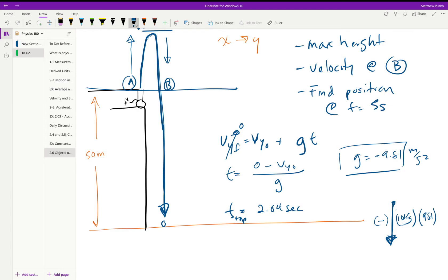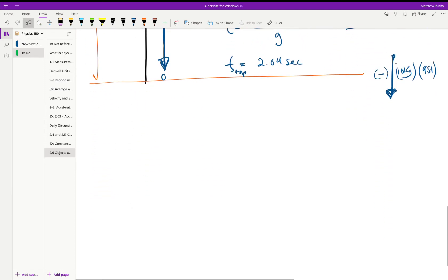All right, now we can find the maximum height of the stone or the cannonball. The maximum height, let's do y final is equal to y initial plus the velocity in the y direction times time plus one half g t squared.